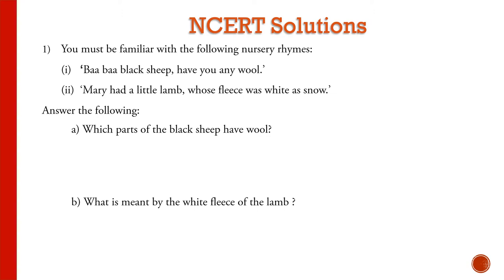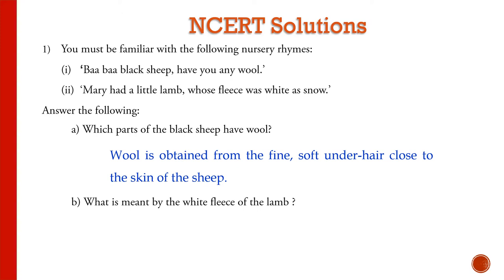Hello friends, today we'll discuss the questions of Chapter 3: Fibre to Fabrics. You must be familiar with nursery rhymes 'Baa Baa Black Sheep, have you any wool?' and 'Mary had a little lamb whose fleece was white as snow.' The wool is obtained from the fine soft under-hair of the sheep, which is close to the skin. The white fleece means the white fur or white hair of the lamb.